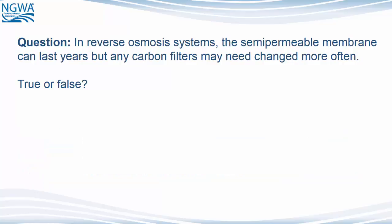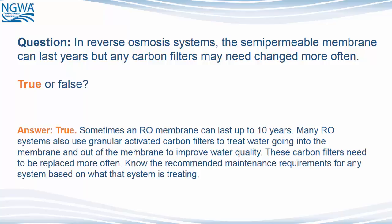Question: In reverse osmosis systems, the semi-permeable membrane can last for years, but any carbon filters may need to be changed more often. True or false? The answer is true. Sometimes an RO membrane can last for up to 10 years. Many RO systems also use granular activated carbon filters to treat water going into and out of the membrane to improve water quality. These carbon filters may need to be replaced more often. Know the recommended maintenance requirements for any system based on what that system is treating.